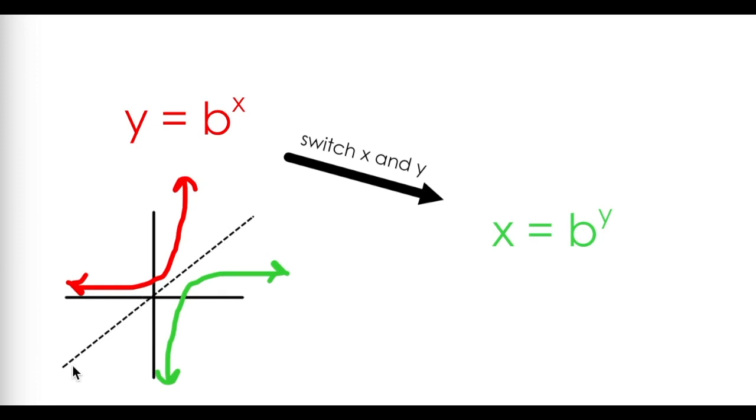We also know that the inverse of a function is a reflection over the line y equals x compared to the original function. If this red function represents my exponential function y equals b to the x, then this green function represents its inverse, x equals b to the y.